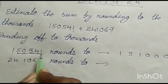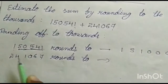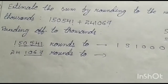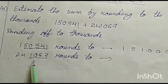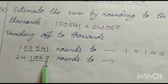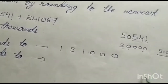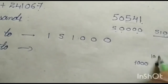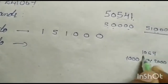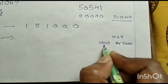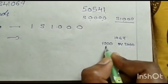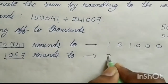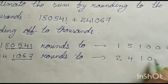Here, 541 confirms it is nearest to 51,000. Now the next number: 2,41,067. We take 1,067 and check: is it nearest to 1,000 or 2,000? It is nearest to 1,000. So the rounded number is 2,41,000.